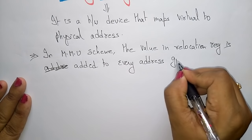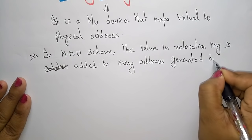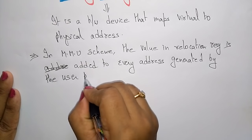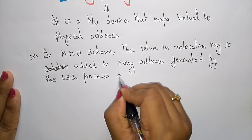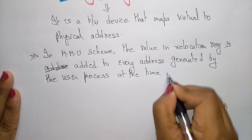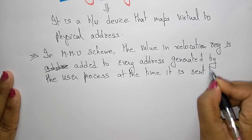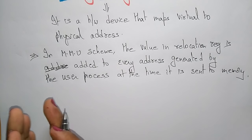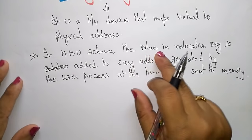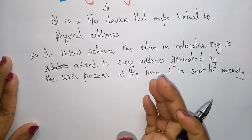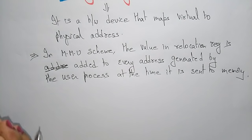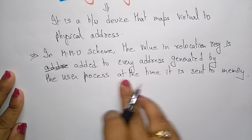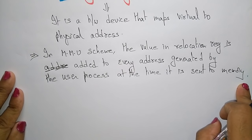The relocation register value is added to every address generated by the user process at the time it is sent to physical memory. Whatever value is present in the relocation register of the MMU is added to every address generated by the user process when it is sent to memory.